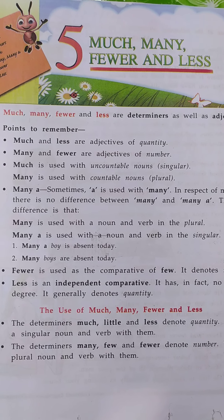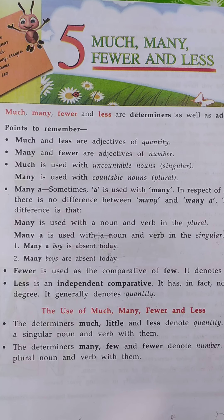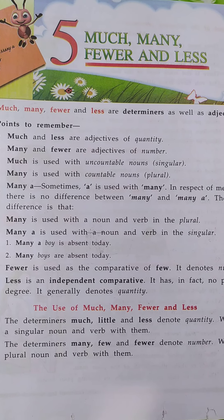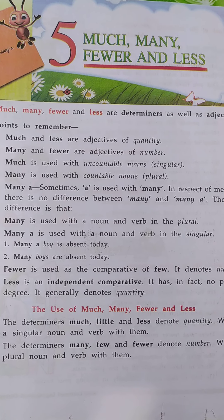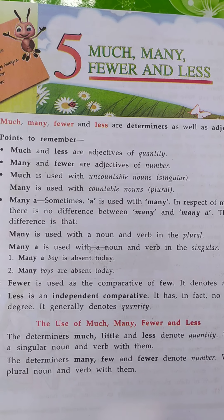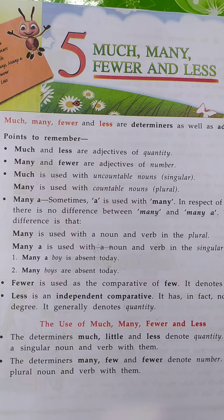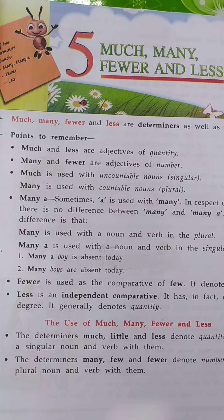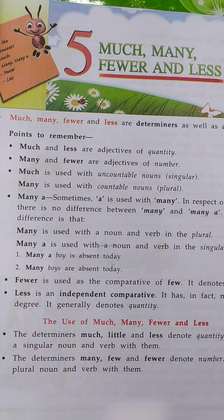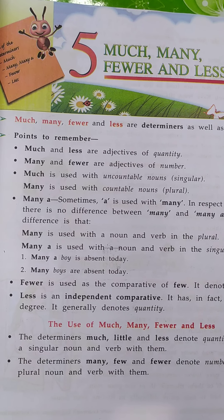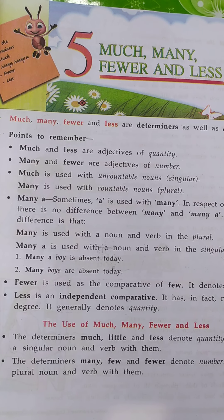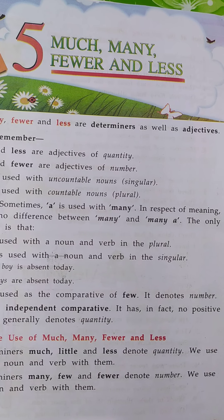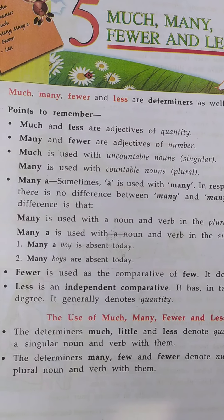Good morning, students. This is your English class. Now we are studying chapter 5 in your English grammar book, which is about the topic much, many, fewer and less. In the previous class we have already studied some topics on much, many, fewer and less. Today in this class we are going to study about the use of much, many, fewer and less. So let's open page number 23 in your English grammar book and start reading.